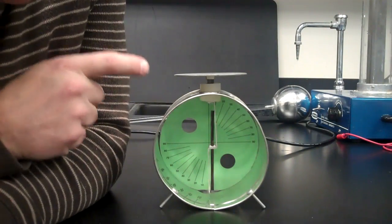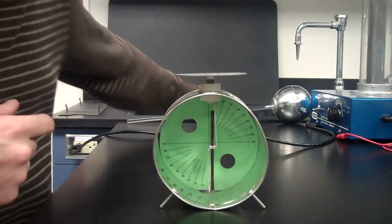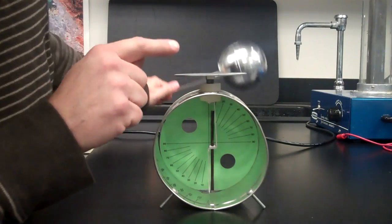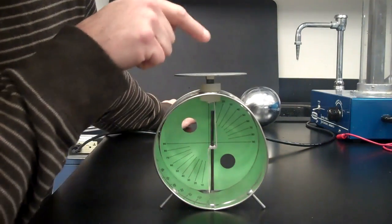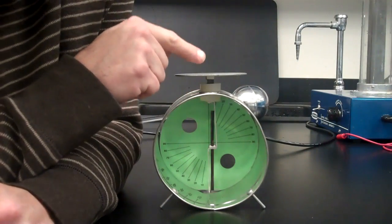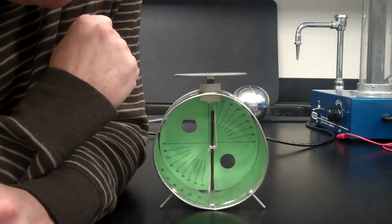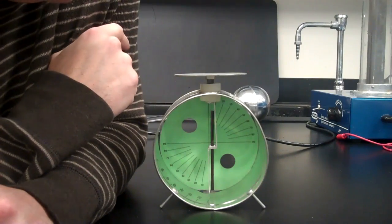The reason the arm was deflected is that when I bring the wand close by, the electrons that are already existing in the atoms of the metal plate in the electroscope are repelled by the electric field of the negatively charged wand.